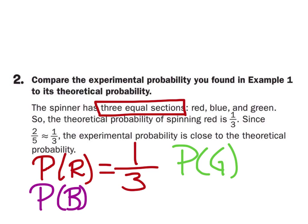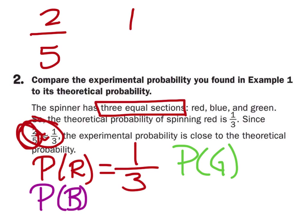In comparison, the theoretical probability is one-third. Looking back at the experiment, it landed on red 24 out of 60 times, which reduces to two-fifths. It's almost one-third. You could say two-fifths is very close to one-third, or you could say one-third is bigger than two-fifths. Some teachers will make you write this as a sentence: two-fifths is less than one-third, but they're very close.